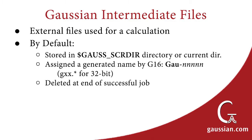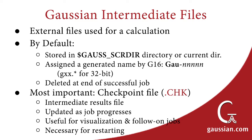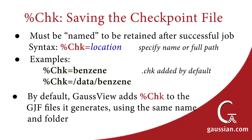The most important of these is the checkpoint file, which is a results file that is updated as the job progresses. Once the job completes, this file can be used for results visualization. The checkpoint file is also needed for running follow-on calculations and restarting failed jobs. We recommend always saving and retaining checkpoint files. This is accomplished by assigning the file a name via the %Check Link0 command, most commonly using the same base name as the input file with the extension .chk.